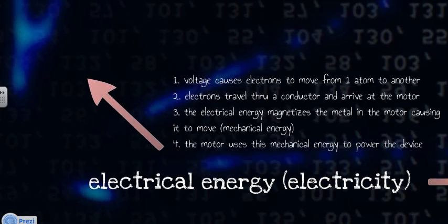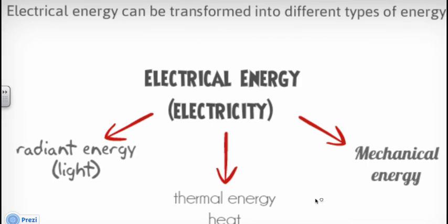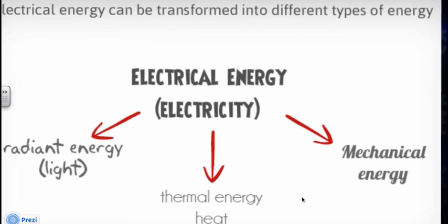There's also another part of this. As we've been talking about, electrical energy can be transformed into three different types of energies: radiant energy, light, thermal energy, which is heat, and mechanical energy. Mechanical energy is the only one we haven't talked about. So let's explore this type of transformation a little bit more.